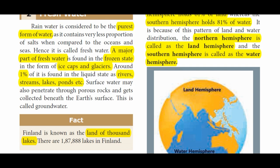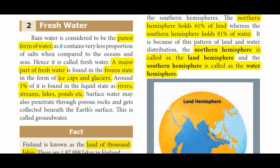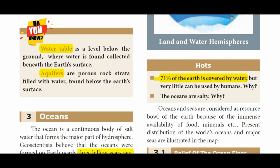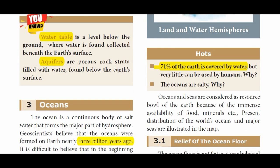It is very important: 61% land in the northern hemisphere, 81% water in the southern hemisphere. The southern hemisphere is largely covered by water. Overall, 71% of the Earth is covered by water.